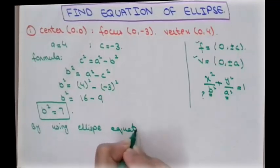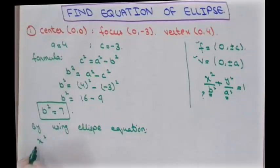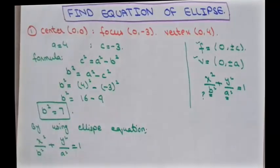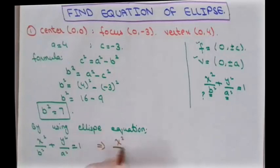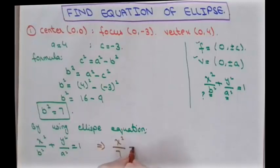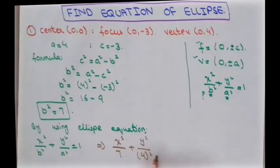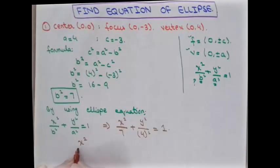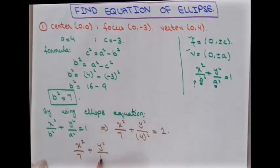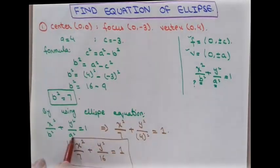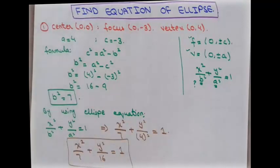Using the ellipse equation x²/b² + y²/a² = 1, we substitute: x²/7 + y²/4² = 1, which simplifies to x²/7 + y²/16 = 1. This is our final equation of the ellipse for the first example.